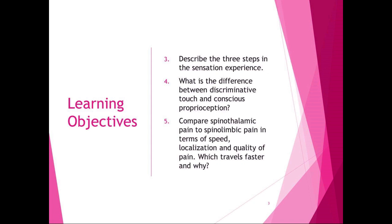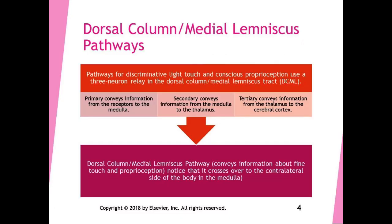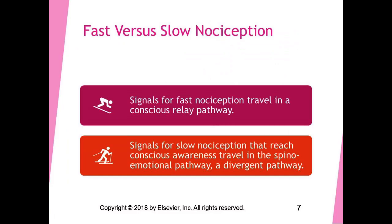We're going to talk about spinal limbic pain. We talked about spinothalamic pain in the last section — that's the fast pain, quickly localized, and it travels in fast myelinated A-delta fibers in the anterolateral column. Spinal limbic pain is the slow pain that is not well localized, whereas spinothalamic pain is the fast pain that is well localized.